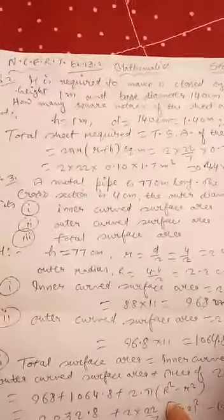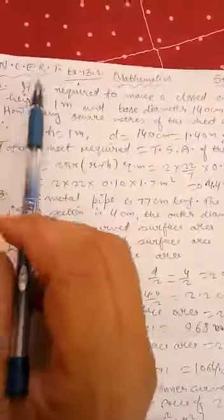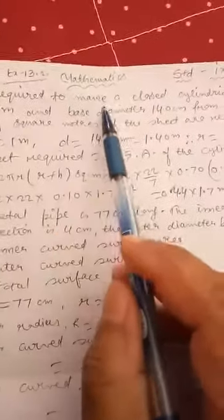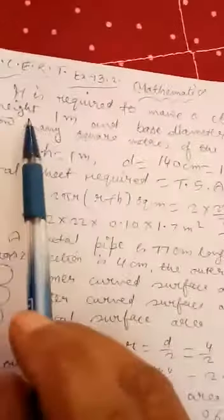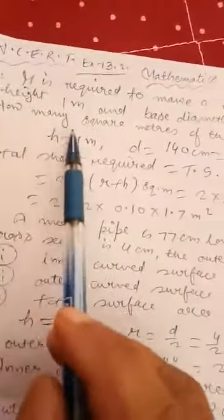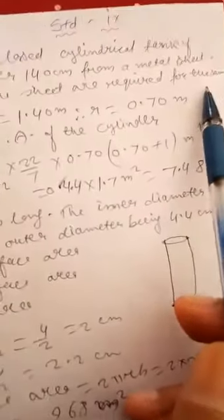Dear students of Greenland Public School, Shibdhara of class 9th, I would like to guide you in mathematics in NCERT exercise 13.2, question number 2. It is required to make a closed cylindrical tank of height 1 meter and base diameter 140 centimeter from a metal sheet. How many square meters of the sheet are required for the same?